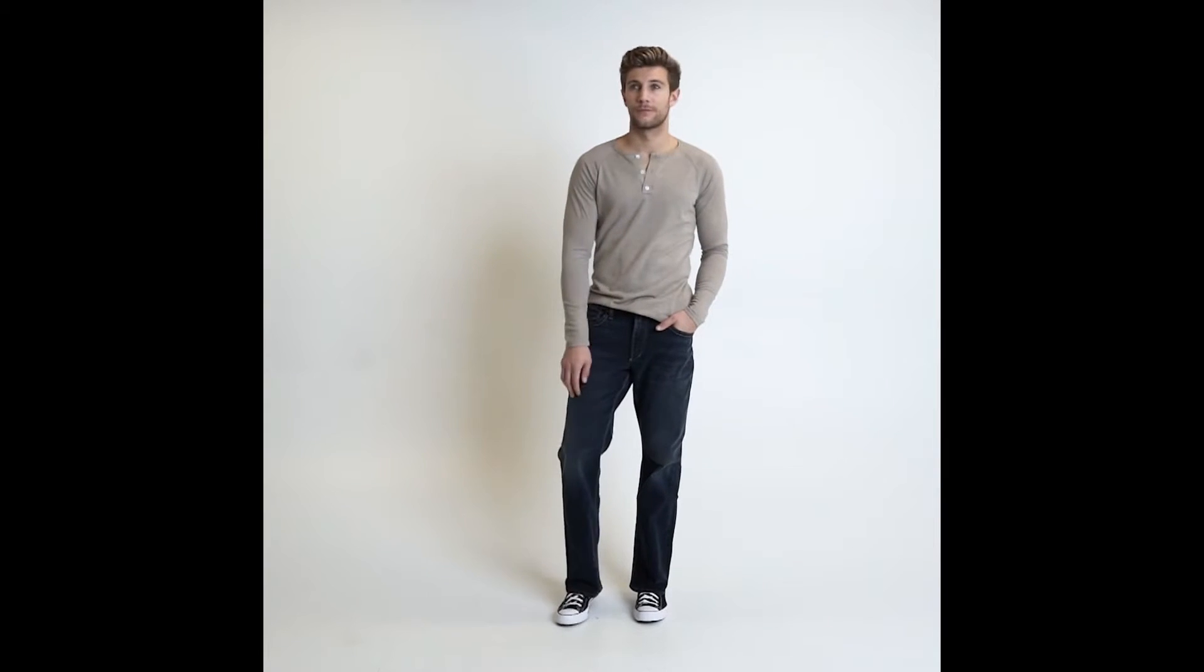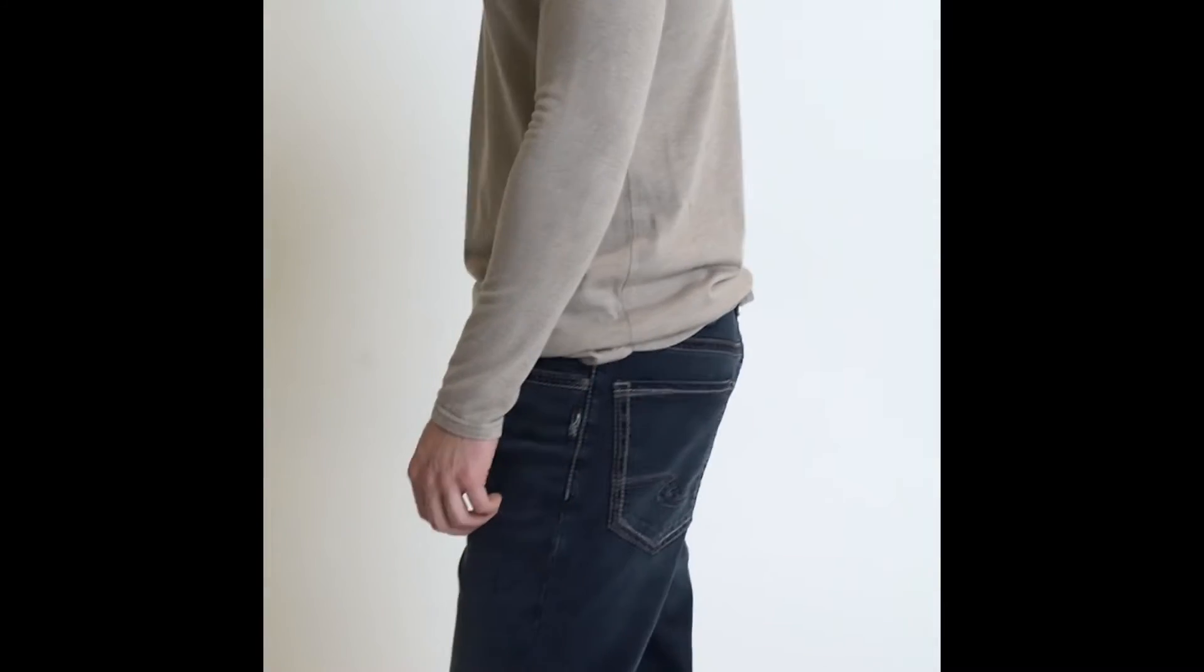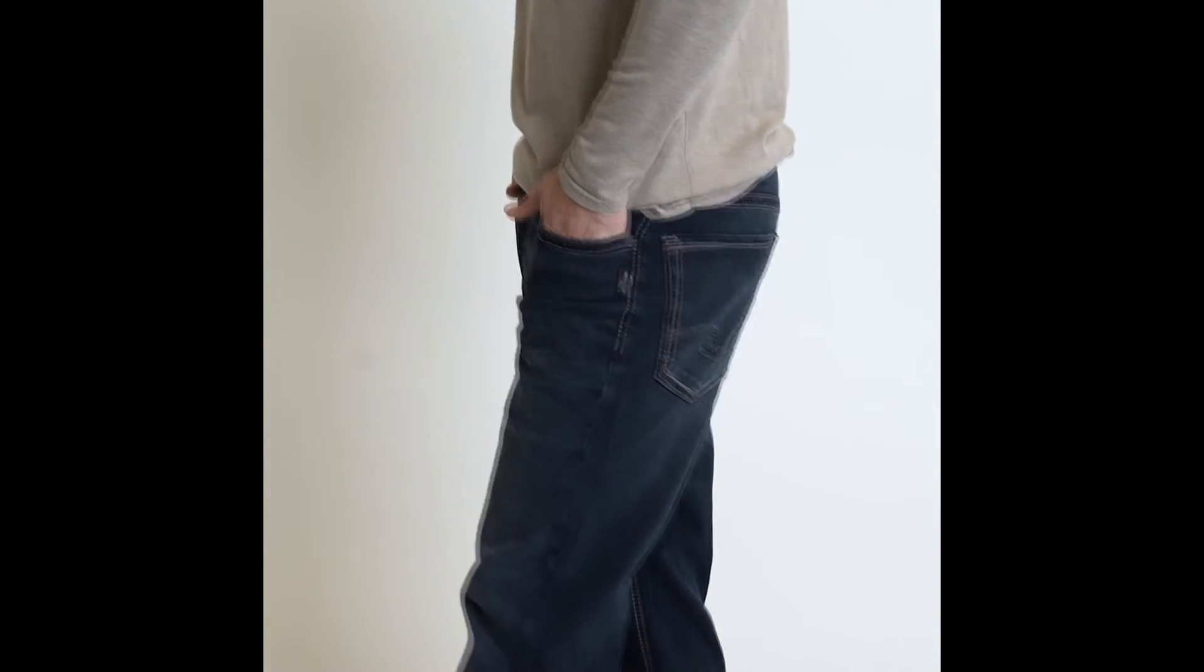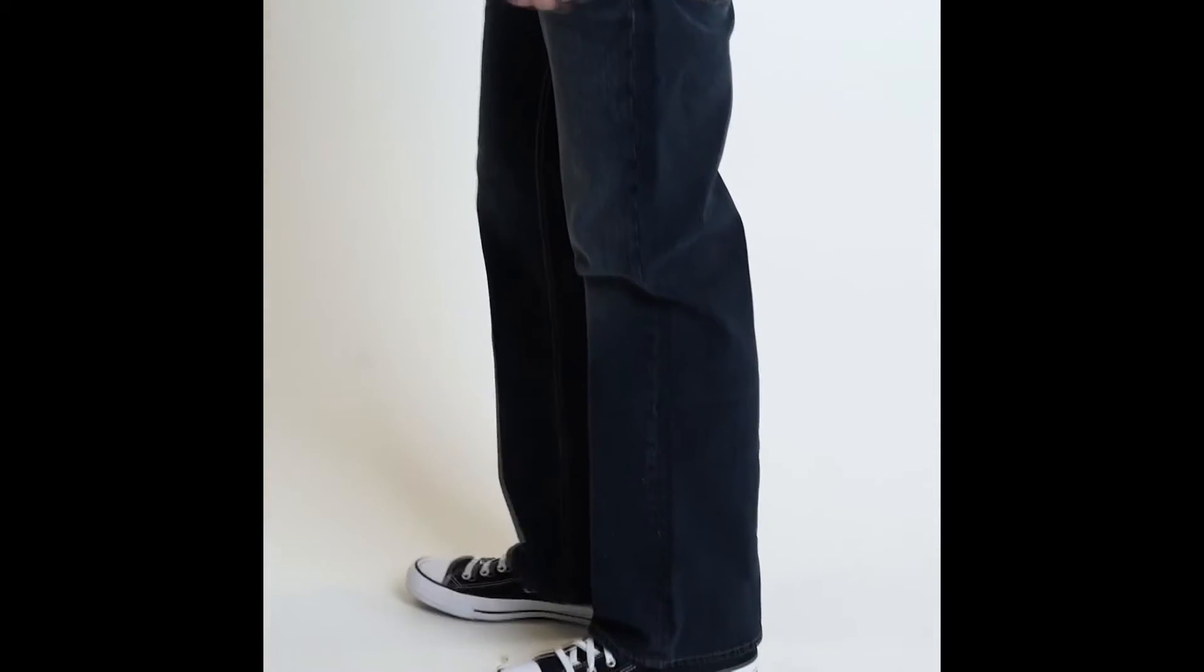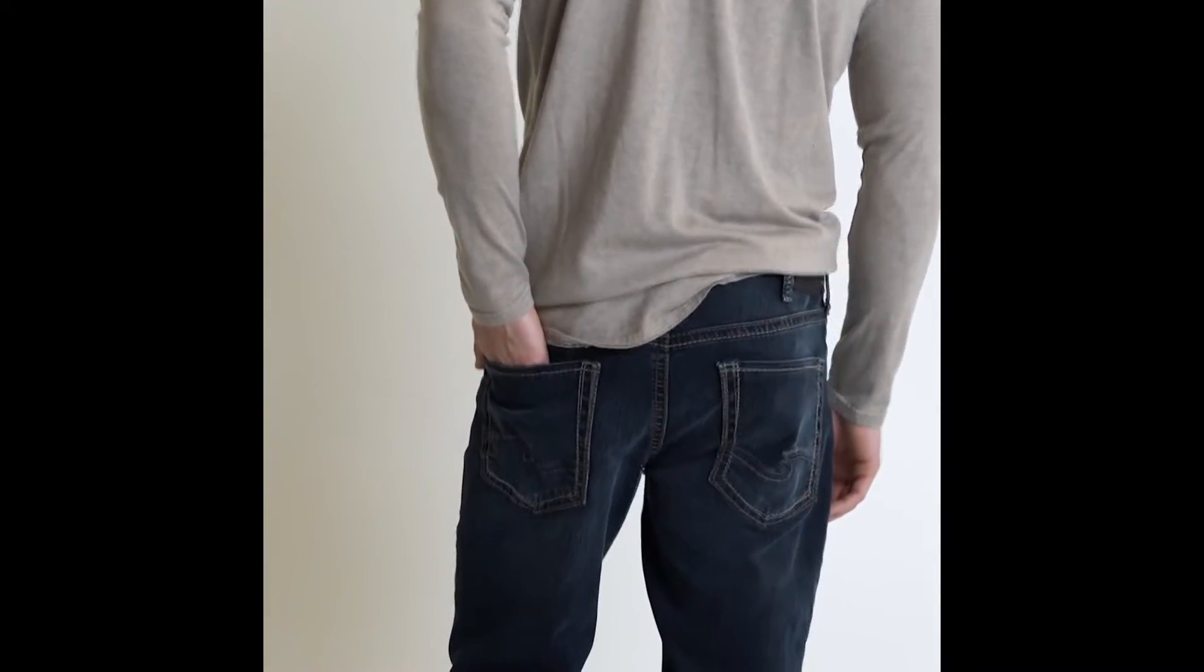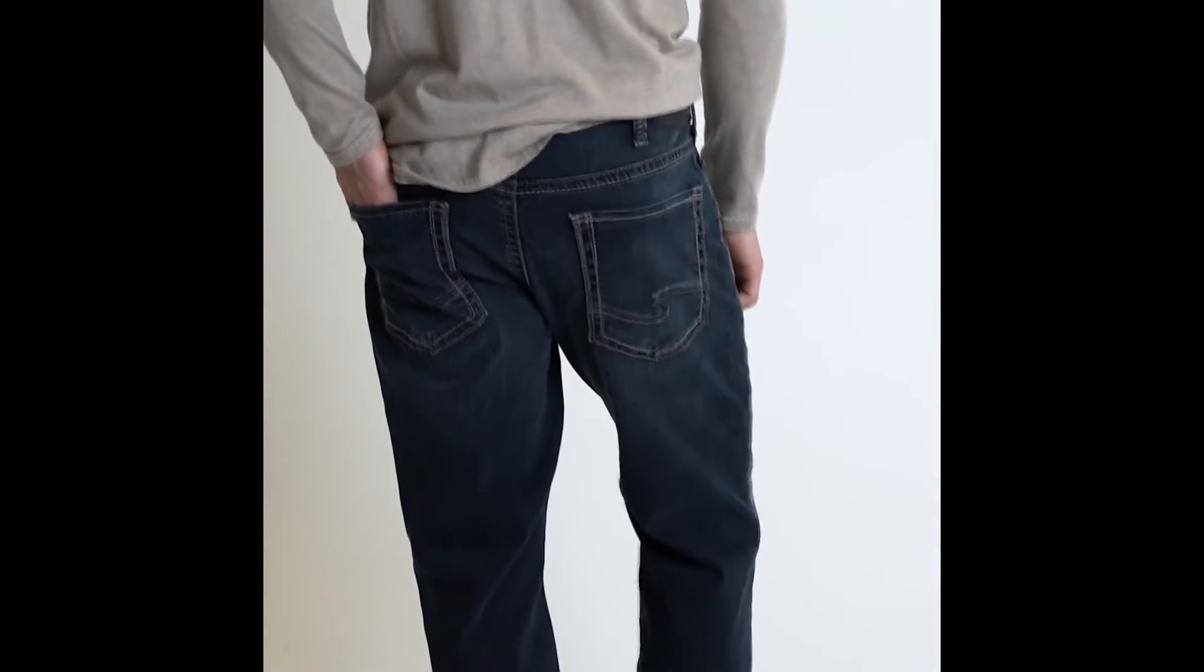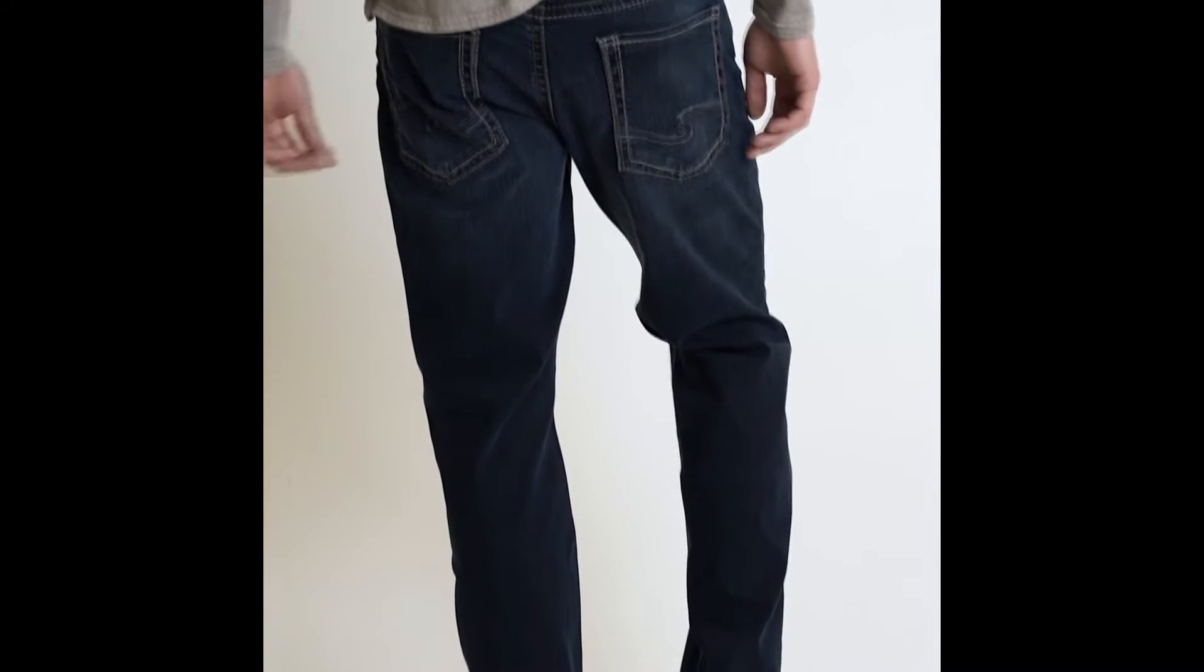And then we go into our next wash, which is our EBB419. And this is a dark blue-black shade with a subtle whisker laser pattern. It has a multi-needle back pocket scroll with light topstitch framing.